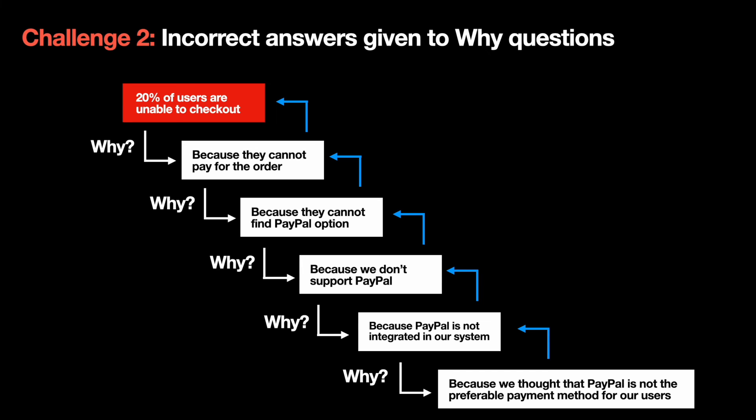You can use this tool in reverse order. Read it line by line from bottom to top to ensure that the trail doesn't have any issues. Because we thought that PayPal was not the preferable method for our users, we didn't integrate it into our system and didn't support it. Because users couldn't find PayPal among the options, they couldn't pay for the order.